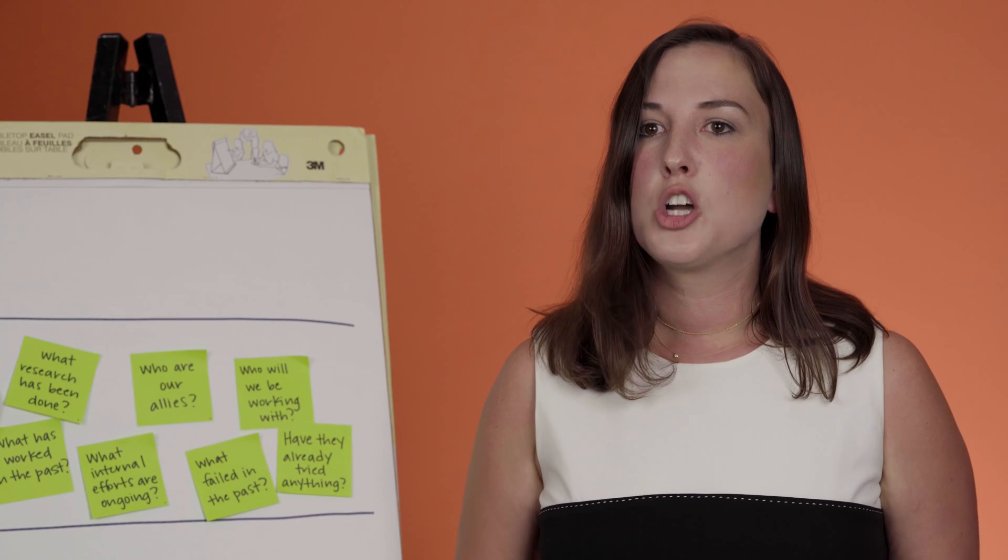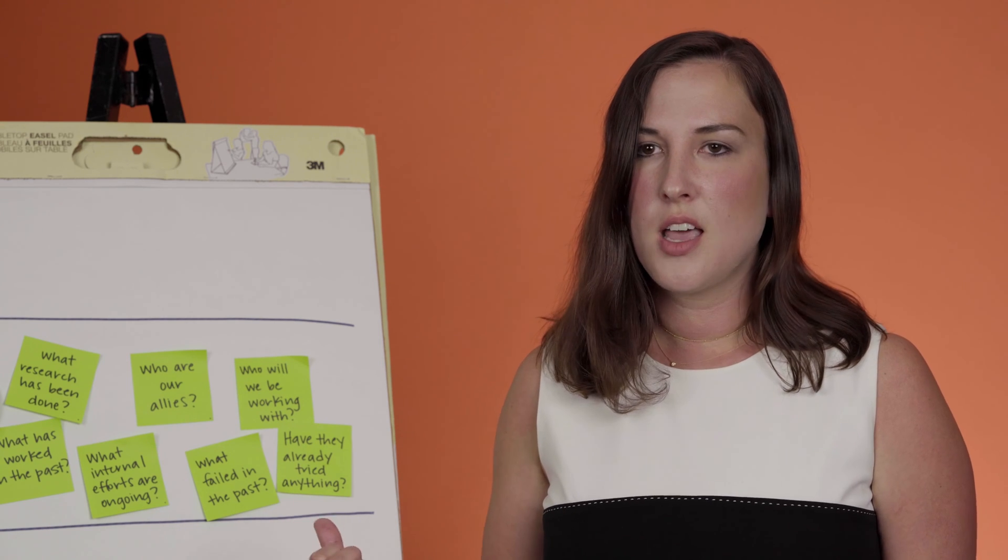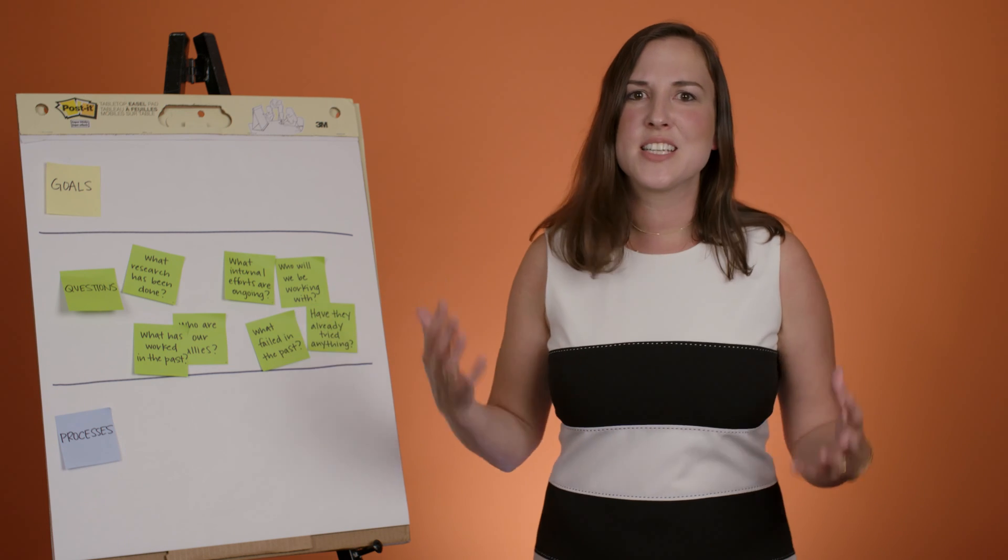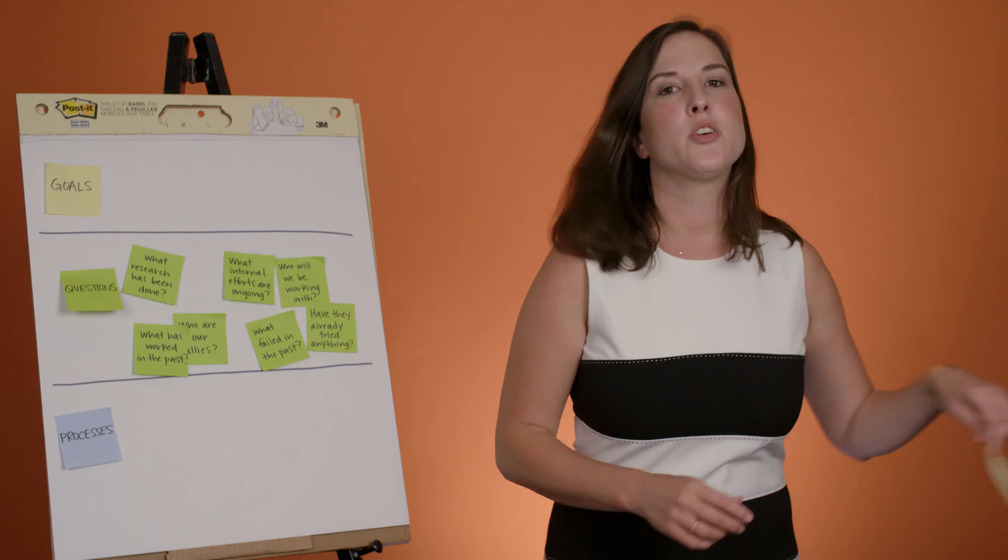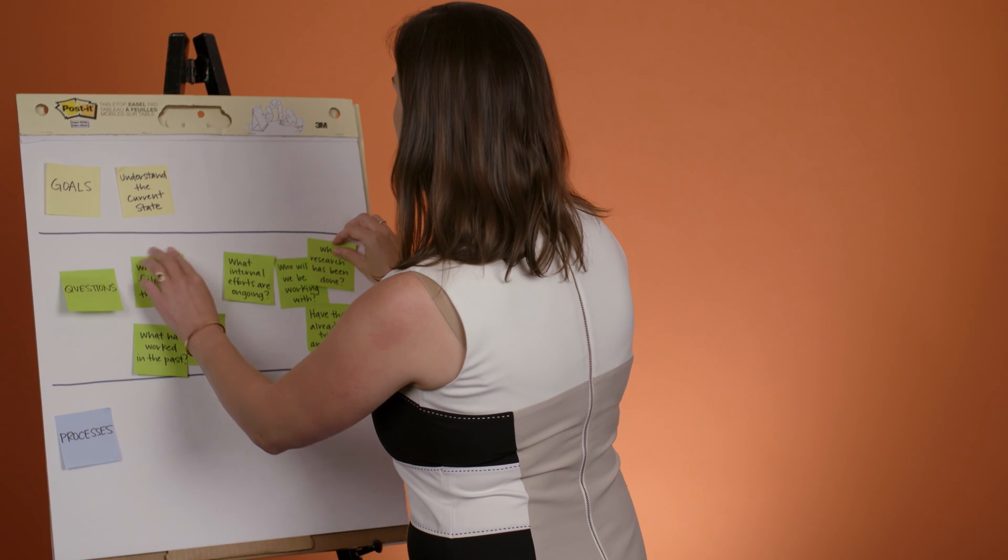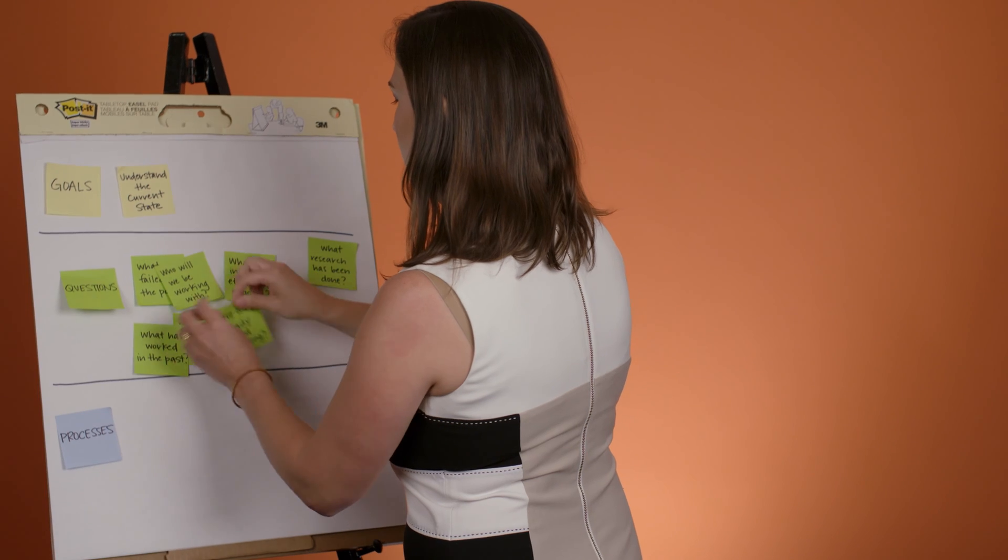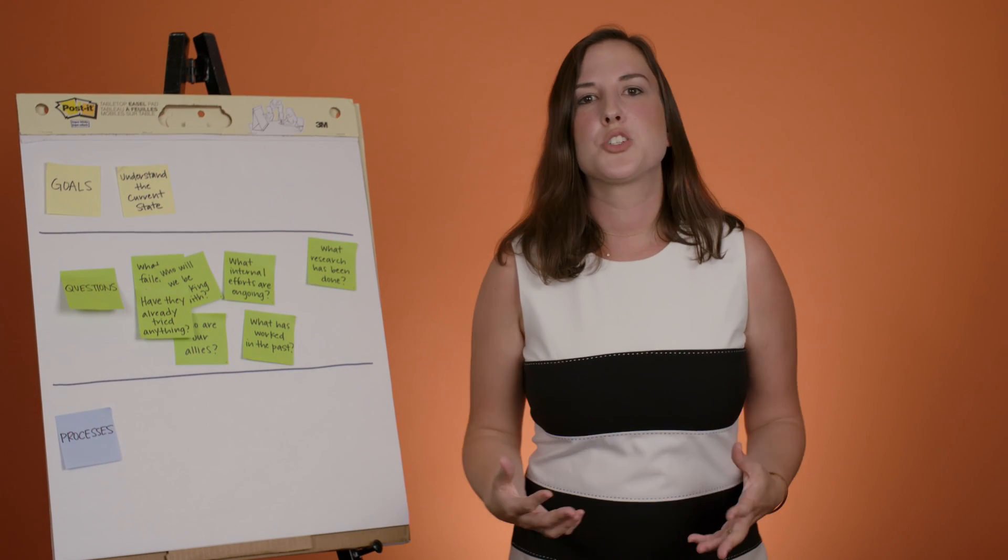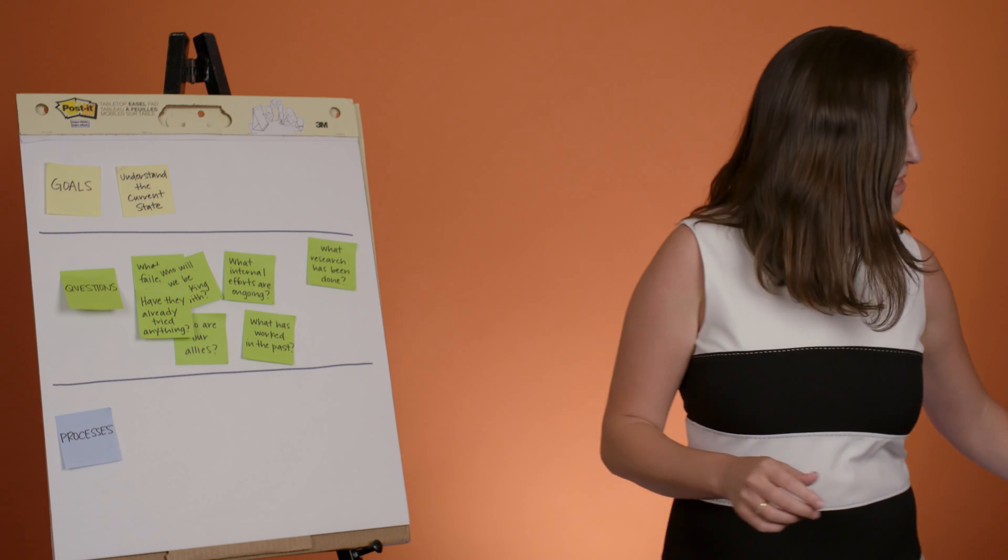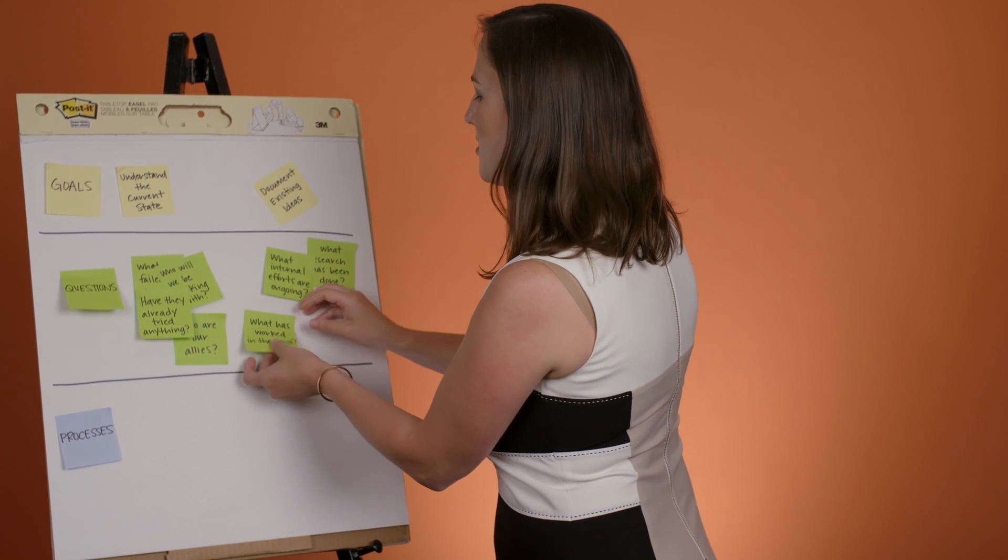Now once you finish brainstorming questions, goals start to become more evident. The second step is to cluster your questions and give them high-level goal labels. So my questions about stakeholders and existing research seem to suggest that I need to devote some time in the workshop to understanding the current state. So let's cluster those into one group here. My questions about what they've tried in the past and what they're doing currently seem to suggest that maybe I need to spend some time in the workshop documenting existing ideas. So those could cluster into one group as well.